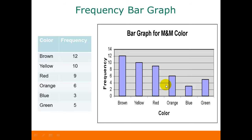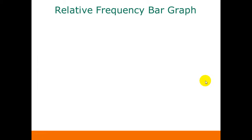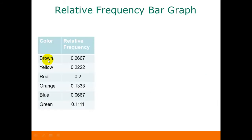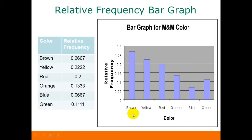Looking at this graph, we could see that there must have been five green M&Ms because the height of that rectangle is five. For our relative frequency bar graph, here are our colors and our relative frequencies. The only real difference between this and our frequency bar graph is what happens on the vertical axis — here we have relative frequencies, so we have decimal values instead of the actual frequencies or counts. So for our red category, we can see that the height of this bar goes up to about 0.2.